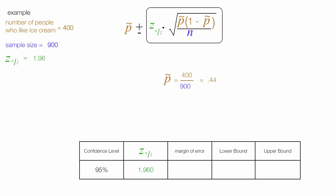Now I'm going to calculate the margin of error, which is that part of the equation. So the margin of error is equal to 1.96 times the square root of 0.44, times 1 minus 0.44, divided by 900, the sample size. This is all equal to 1.96 times the square root of 0.44, times 0.56, divided by 900.